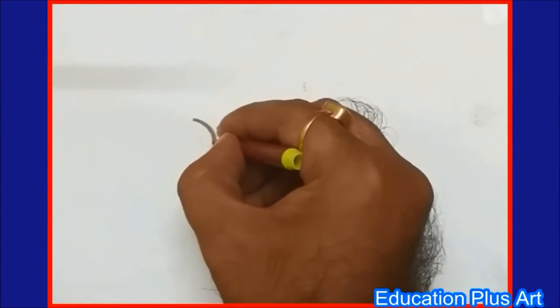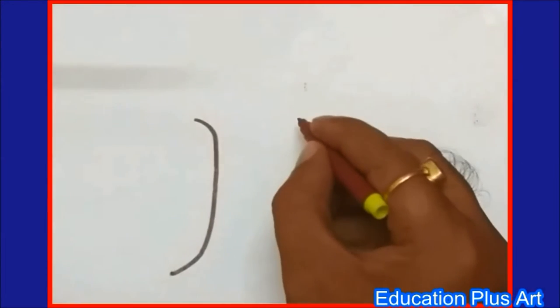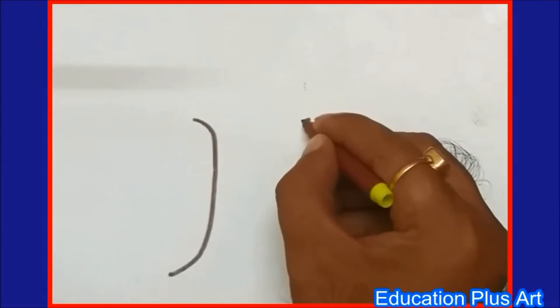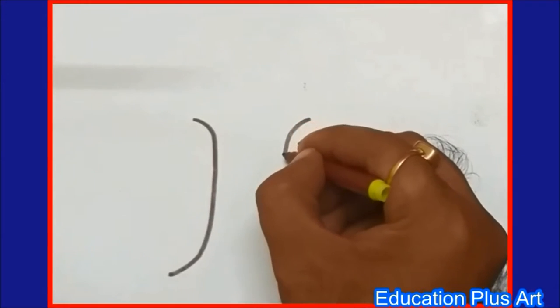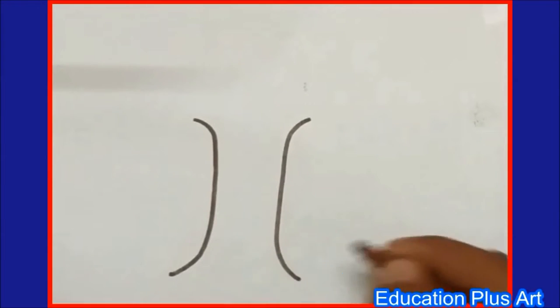One curve line, one straight line, again one curve line, one more curve line, going straight towards downside and again curve.